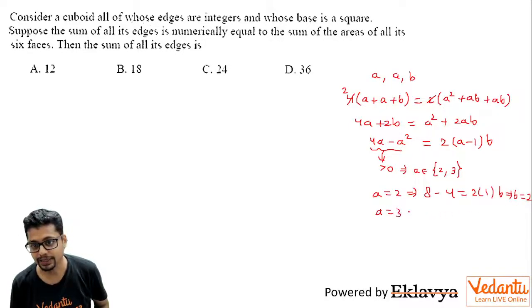What about A being 3? If A is 3, then you have 12 - 9 = 2 × (3 - 1) × B, which is 4B. So B turns out to be 3/4. But B is also supposed to be a positive integer, so this gets rejected. Only this gets accepted. That means A = B = 2.